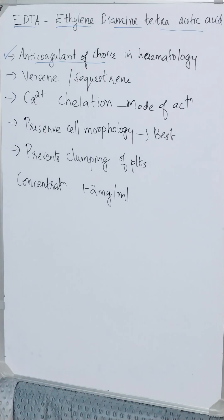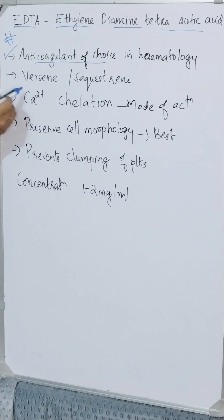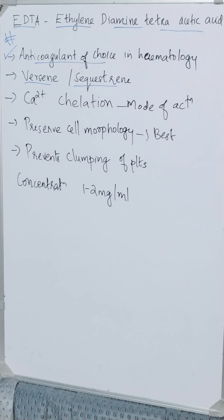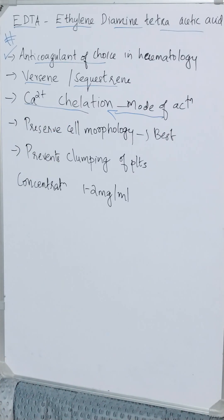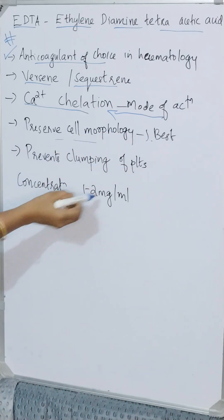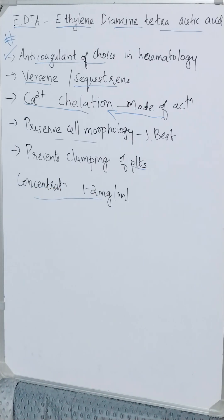EDTA stands for ethylenediamine tetra-acetic acid. It is known as the anticoagulant of choice in hematology, and is commercially known as Versene or Sequestrine. Its mode of action is calcium chelation — EDTA binds calcium as an insoluble salt. Its advantages are that it best preserves cell morphology and prevents clumping of platelets. The concentration commonly used is 1 to 2 milligrams per ml of blood.